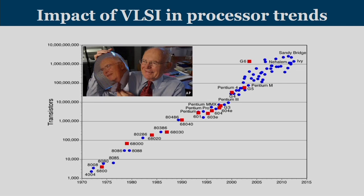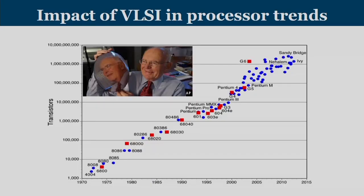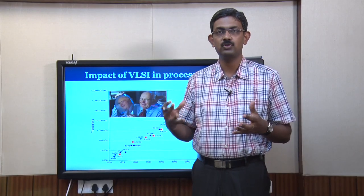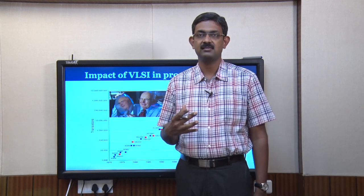This graph shows the trend of transistors available inside a single chip. Gordon Moore predicted that the number of transistors inside an IC is going to double every 18 months. Over the years, many processors were developed and manufactured, and the number of transistors is plotted on the y-axis. We can see that transistors are steadily increasing every year. Thanks to advancements in VLSI design techniques, we could squeeze more transistors into a given space, and the package density of transistors has gone up to very high numbers.